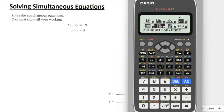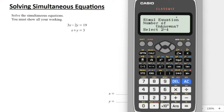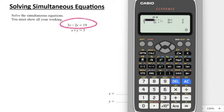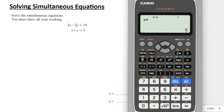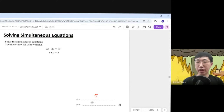For simultaneous equations, go to the equation/function mode, press equal, choose simultaneous equation. How many unknowns? We have x and y, so press 2. Key in the coefficients: first equation has 3 for x and minus 2 for y, equal to 19. Second equation has 1 for x and 1 for y, equal to 3. Press equal and the answer appears straight away: x is 5, y is negative 2.